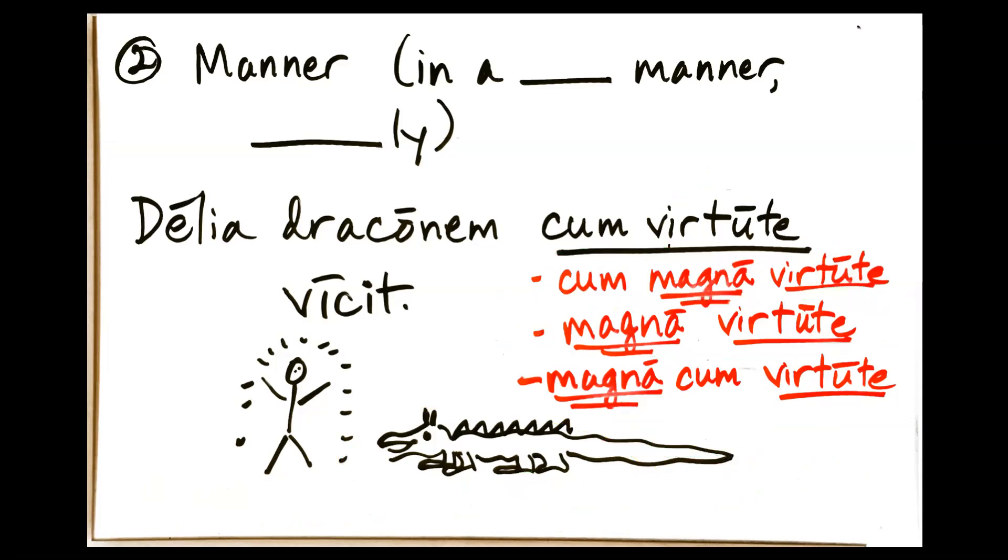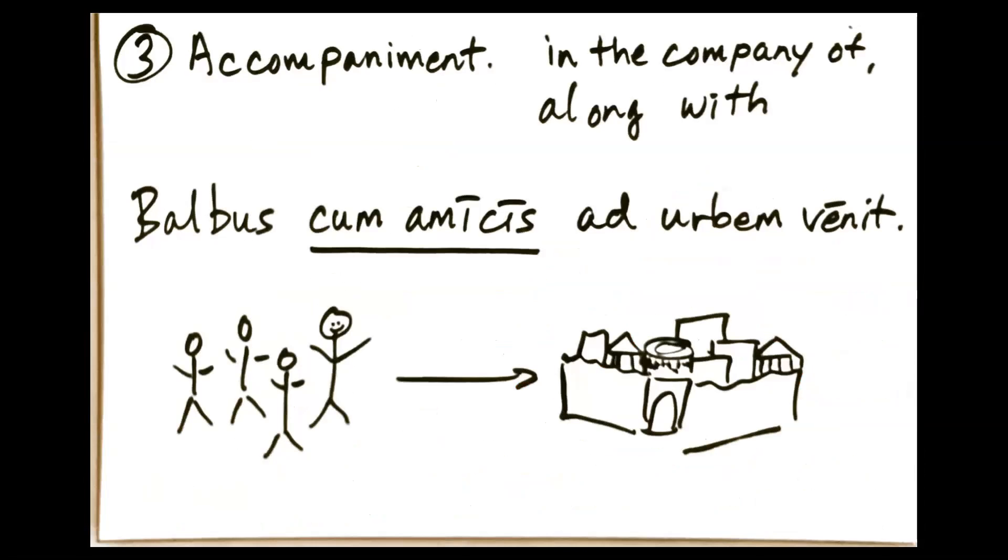Okay, moving on. The third and last way to say with in Latin. This is the ablative of accompaniment, and this is maybe the most straightforward to English speakers. The ablative of accompaniment is with in the sense of in the company of or along with.